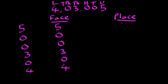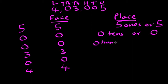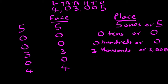So the place value for 5 will be 5 ones or 5. 0, 10s are 0. Again 0, 100s are 0. 3, 1000s are 3,000.